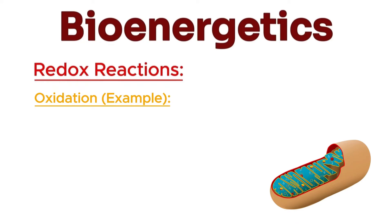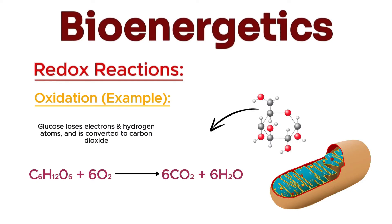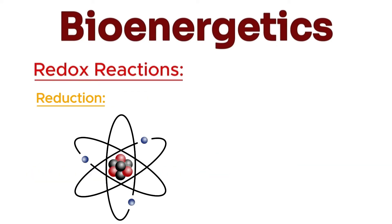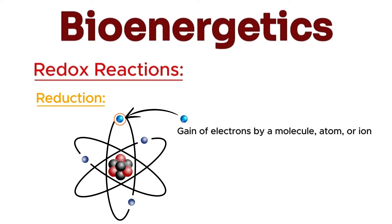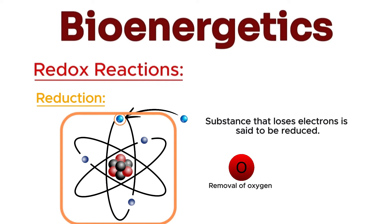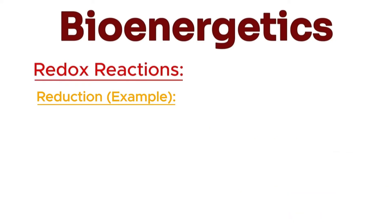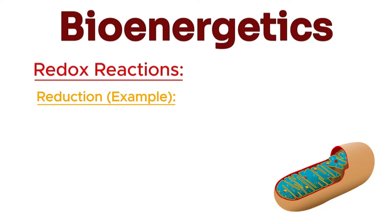In cellular respiration, glucose is oxidized. Glucose loses electrons and hydrogen atoms and is converted to carbon dioxide. Reduction is the gain of electrons by a molecule, atom, or ion. The substance that gains electrons is said to be reduced. This often involves the removal of oxygen or the addition of hydrogen and results in a decrease in the oxidation state of the substance.